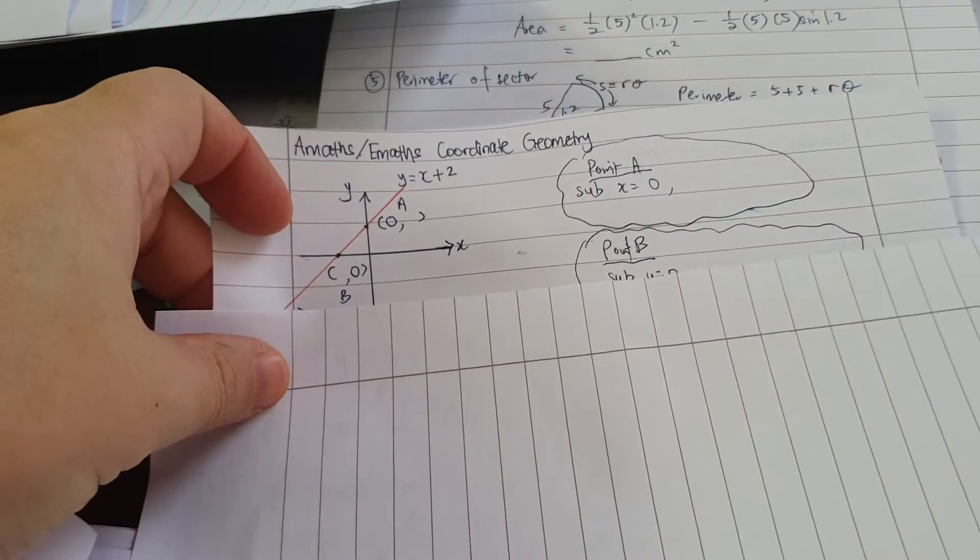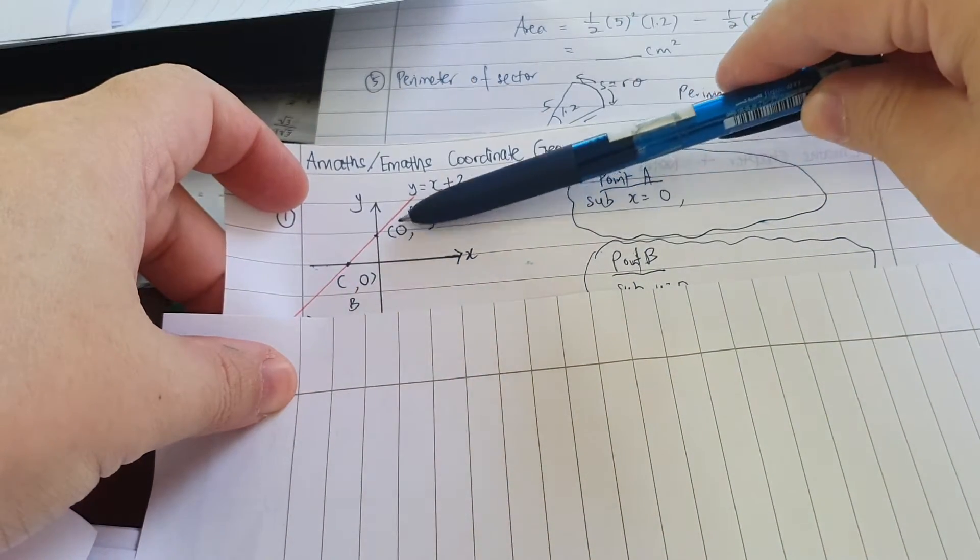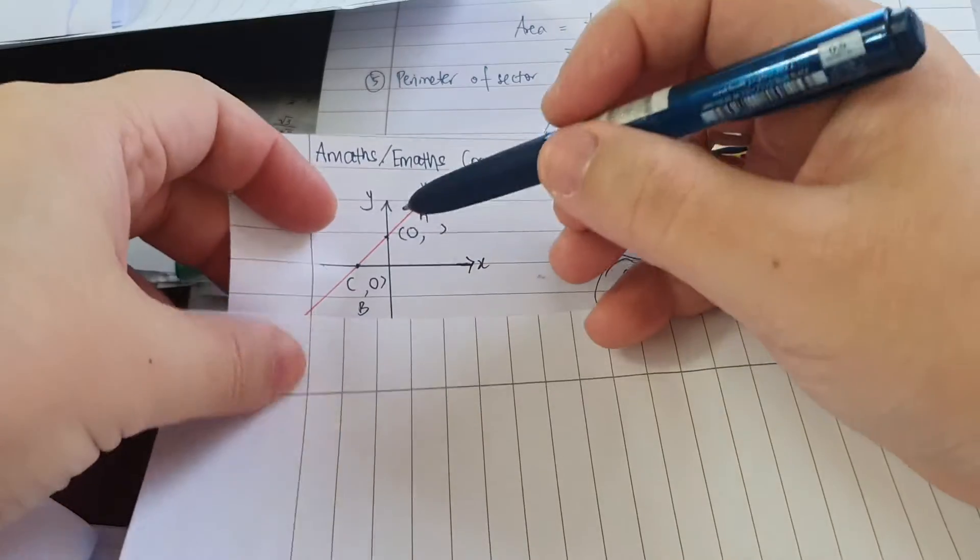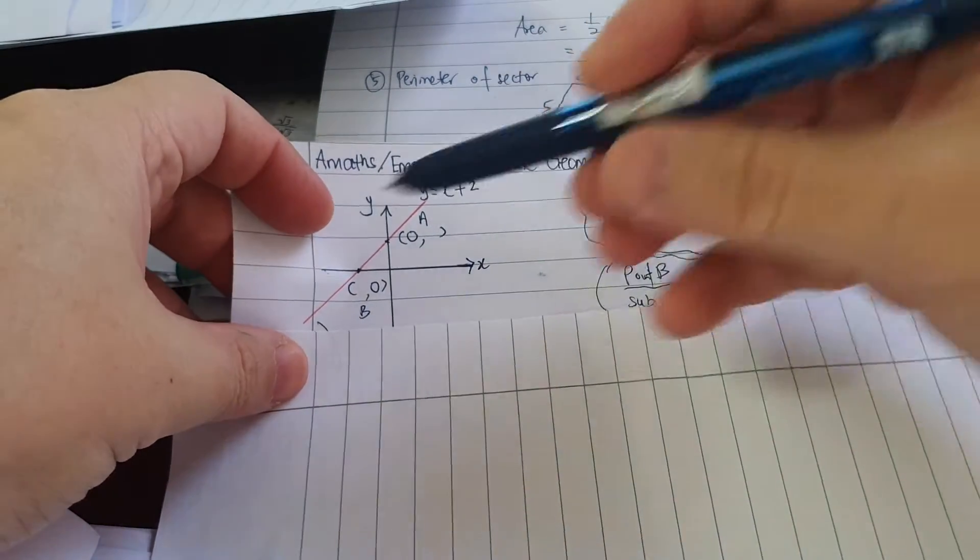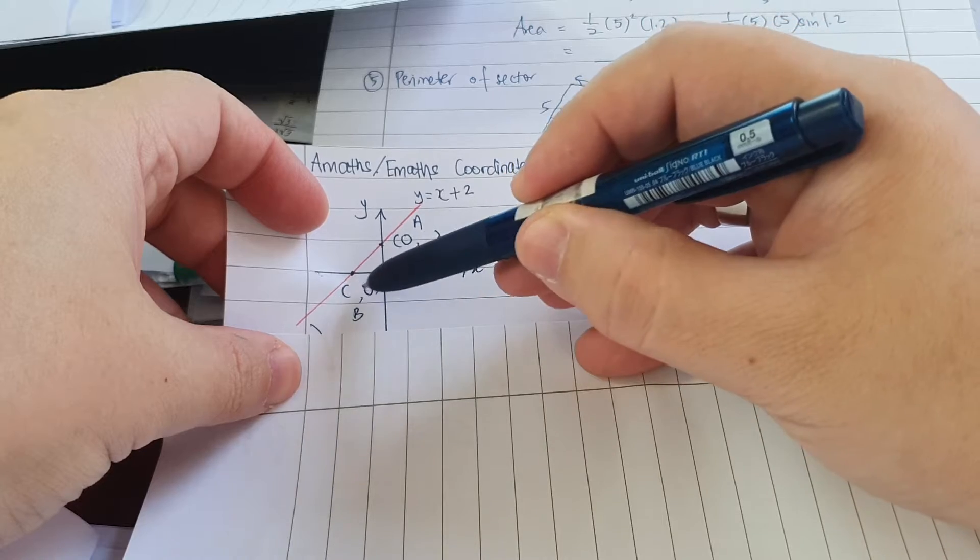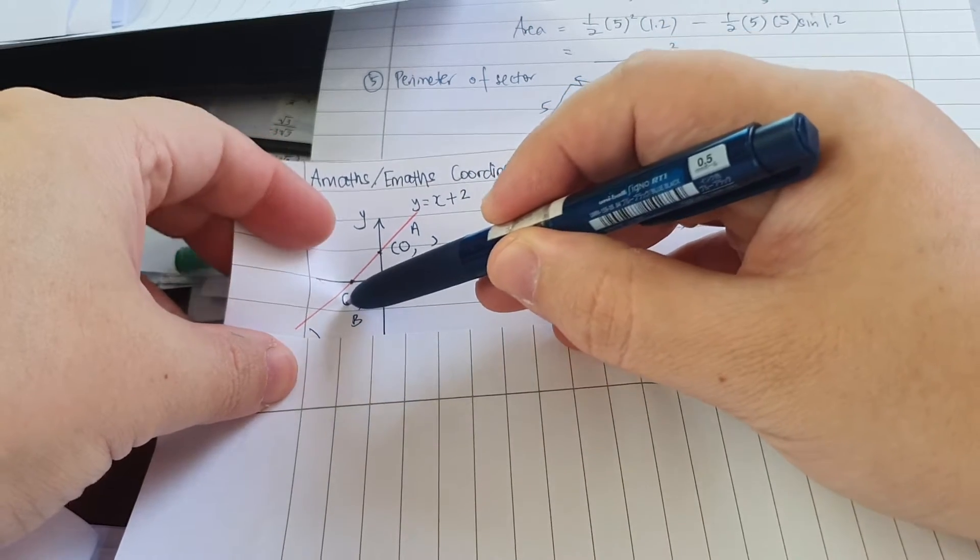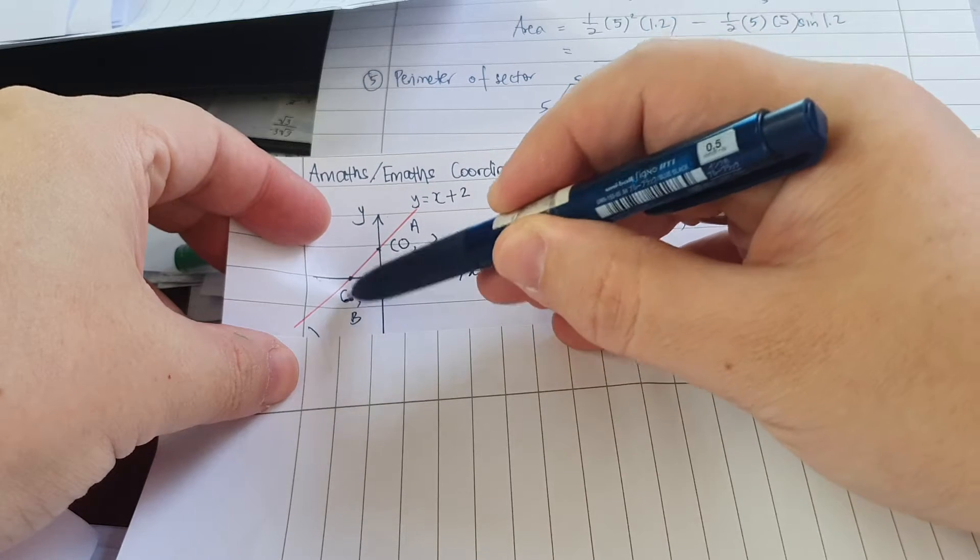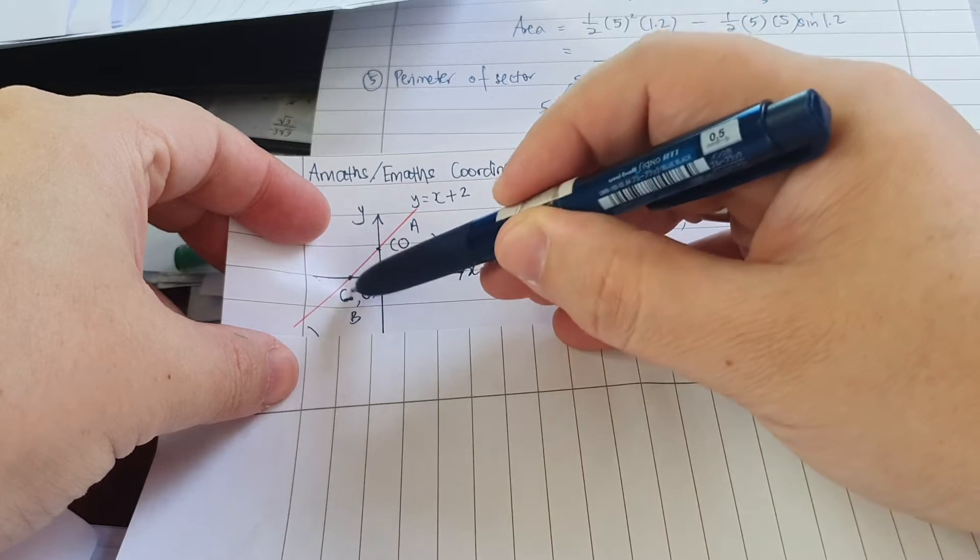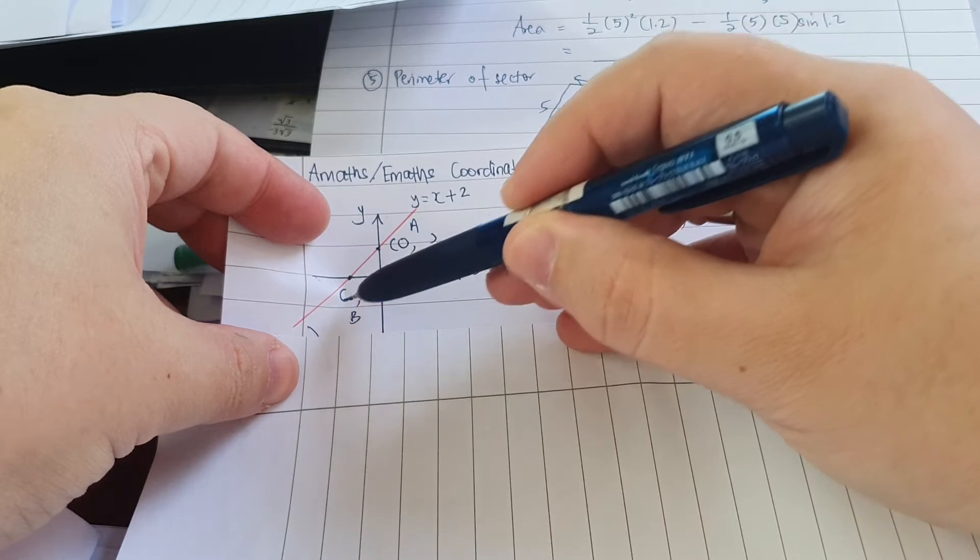Now, very importantly, you need to know that when a line cuts the X and Y axis, you need to know what to sub in. A very good way to do it is this: if you're on the X axis, you must have some X value. There must be a number, not zero, that's here. Of course, unless you're at the origin, then it's zero, zero.